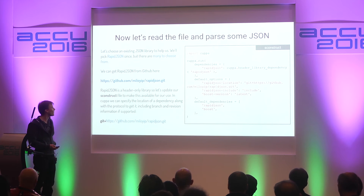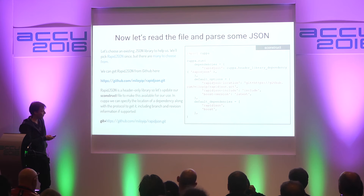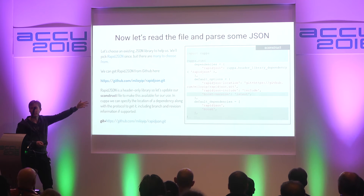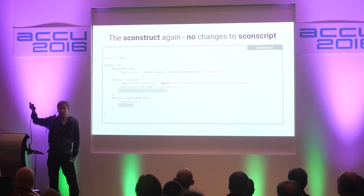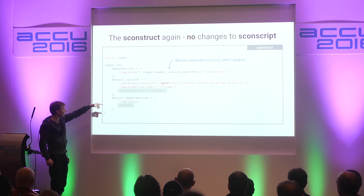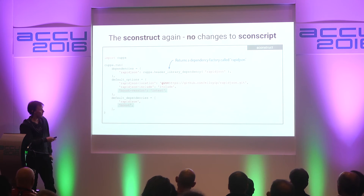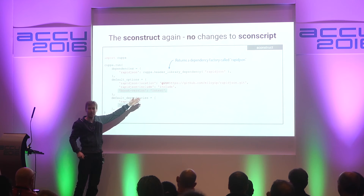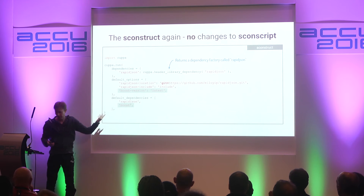Now we'll do some parsing - we'll parse some JSON. We want to use a JSON library. I found RapidJSON - there's a whole bunch of them. In order to use this, we just make a change to our SConstruct file. We've added some stuff that talks about RapidJSON. It turns out RapidJSON is a header-only library, so we use this facility: 'copper_header_library_dependency'. We call it RapidJSON. This creates a factory which gives us the ability to express options. Because this is on GitHub, we can use the Git protocol to get it, and we specify that the headers we want are in the include subdirectory. We make it a default dependency.